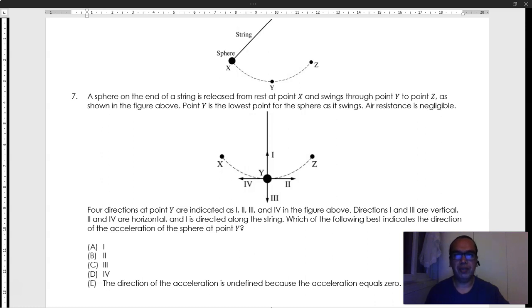Number 7. A sphere on the end of a string is released from rest at point X and swings through point Y to point Z, as shown in the figure above. Point Y is the lowest point for the sphere as it swings. Air resistance is negligible.